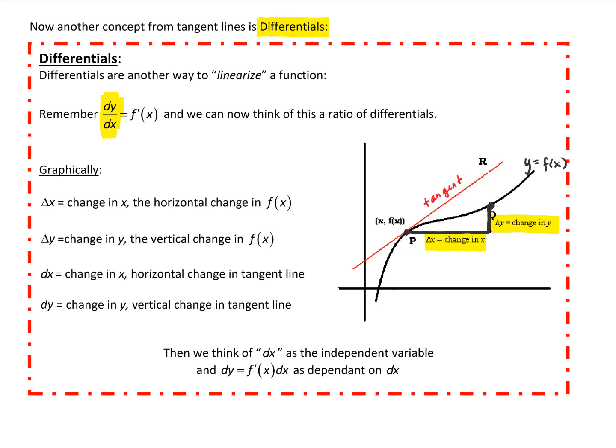Our differentials come from the change on the tangent line. dx is the horizontal change as we move between those two spaces, p and q — it's the horizontal change, drawn here in red. Notice that dx and delta x are actually equal.